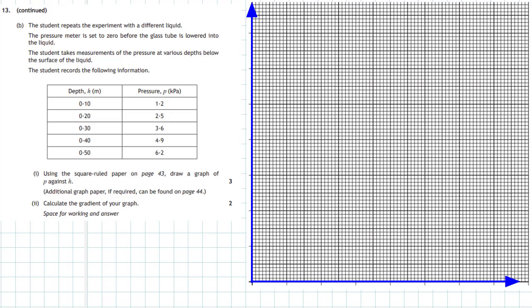The student takes measurements of pressure at various depths below the surface of the liquid and records the following information in a table. Depth h, measured in metres, goes from 0.1 up to 0.5 metres, and the corresponding pressure measured in kilopascals goes from 1.2 to 6.2. At depth zero, we assume a pressure of zero, as set by the student.